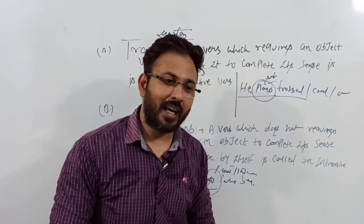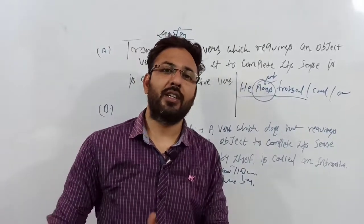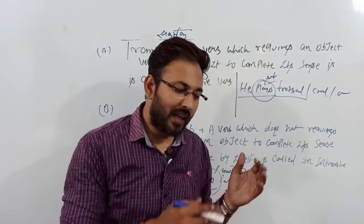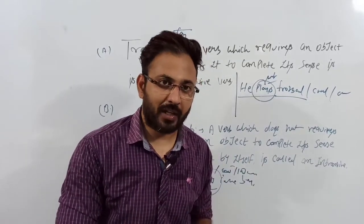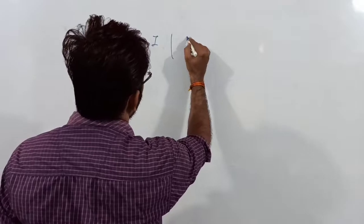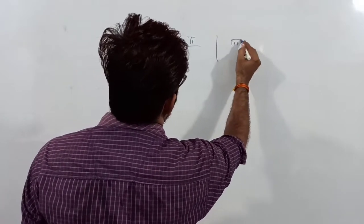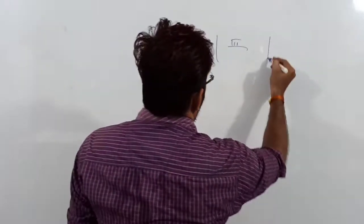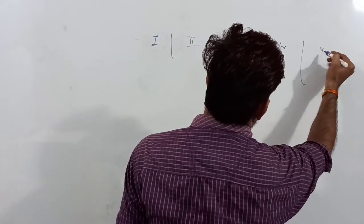I hope you understand transitive and intransitive verbs. Now let's talk about regular and irregular verbs. First, let's talk about verb forms. Verbs have five forms: first form, second form, third form, fourth form, and fifth form.